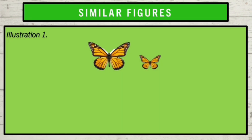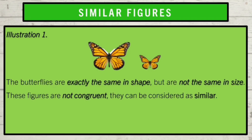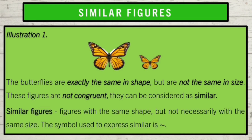Look at the figure. What do you observe? They have the same shapes but are different in size. This is an example of similar figures. But what are similar figures? Similar figures are figures with the same shape but not necessarily the same size. The symbol used to express similarity is a tilde-like line to show that two polygons are similar.